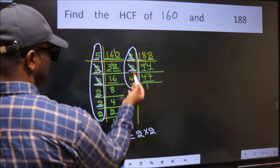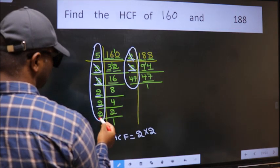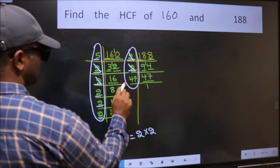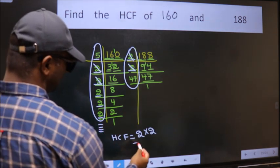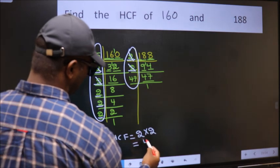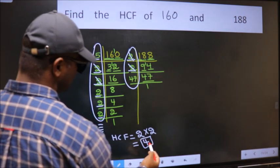Next number 2. Do we have 2 here? No. Next number 2. Do we have 2 here? No. No more numbers have been left out. So our HCF is 2×2=4, that is our HCF.